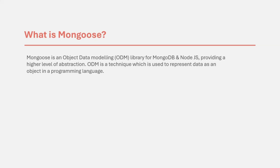From this lecture, we are going to work on user registration functionality. In order to implement user registration functionality, first we need a user schema, and based on that user schema we are going to create a user model. Using that user model, Mongoose is going to create a user collection in our MongoDB database. So in this lecture, we are going to create a user schema and a model out of that user schema using Mongoose.